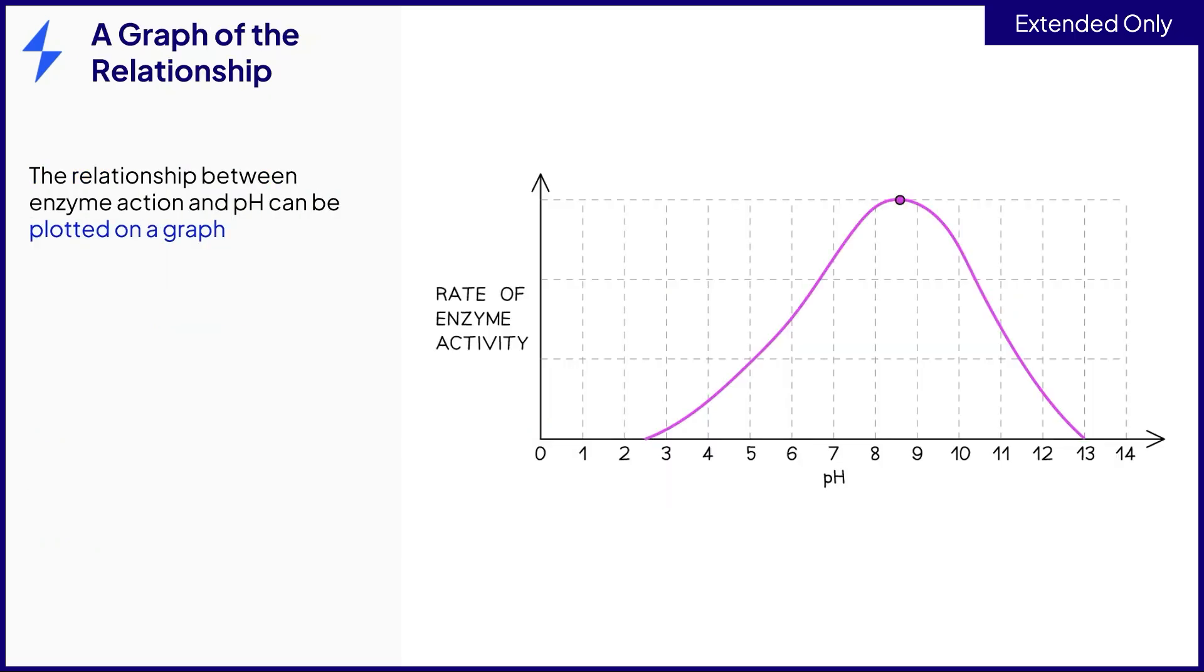This graph shows the relationship between the rate of enzyme action and pH for an enzyme found in the small intestine of humans. The peak of this graph, in the middle, is where the rate of reaction is fastest. This pH is called the optimum pH. In the small intestine, this is approximately pH 8.